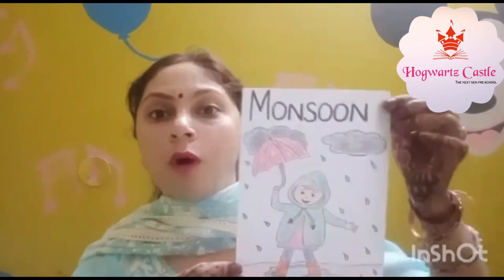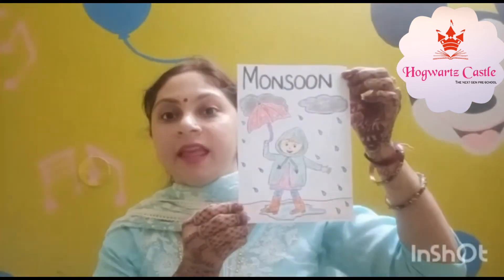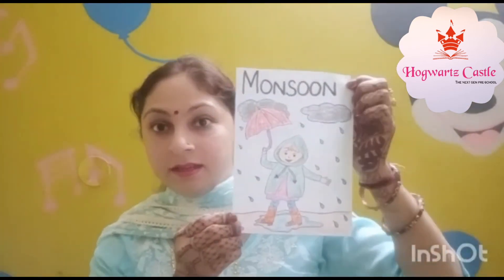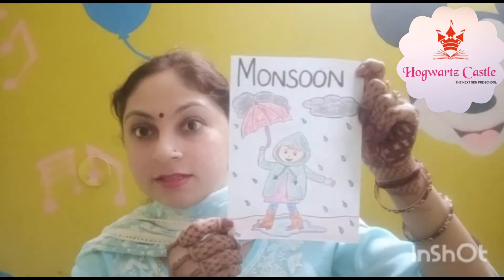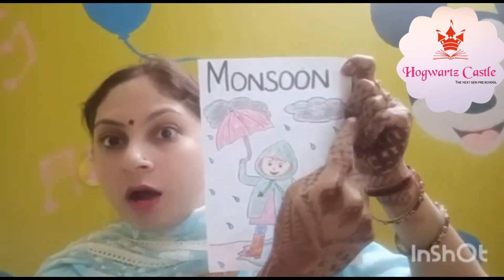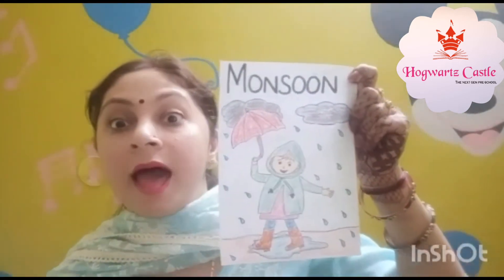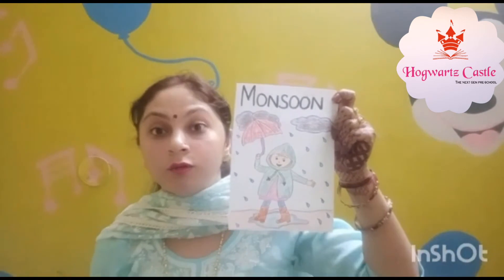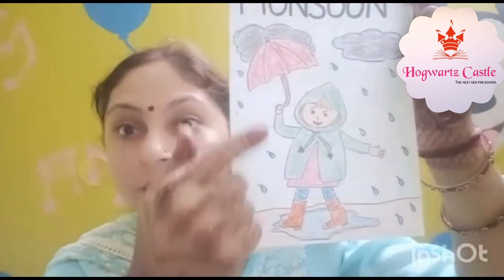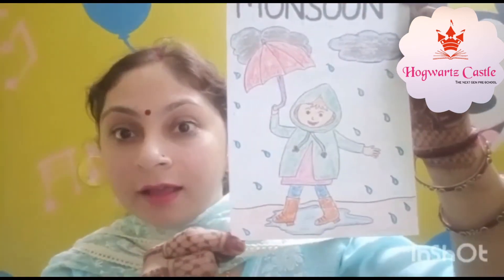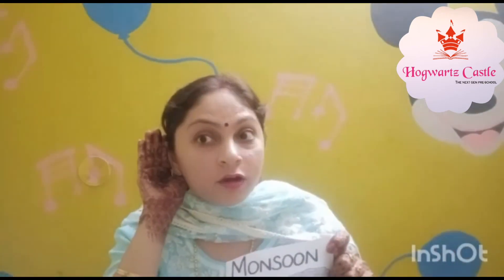That is the monsoon — the rainy season. In the rainy season we usually have dark black clouds, and then the rain falls from the dark black clouds. We can hear the thundering of the clouds.